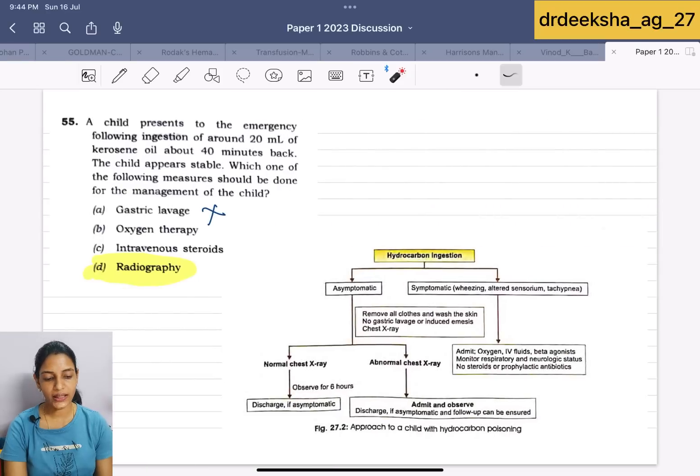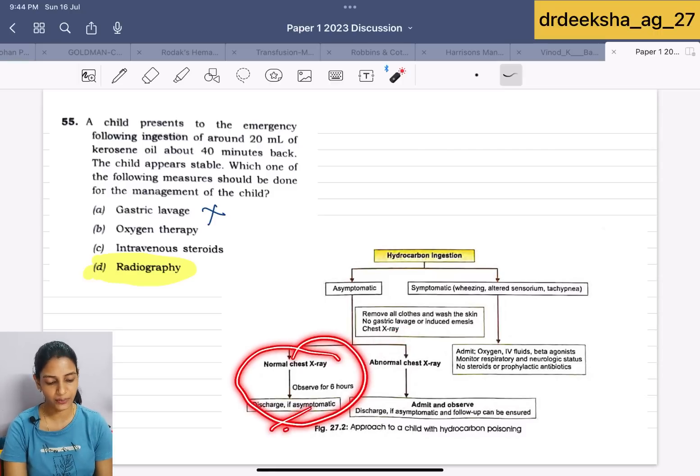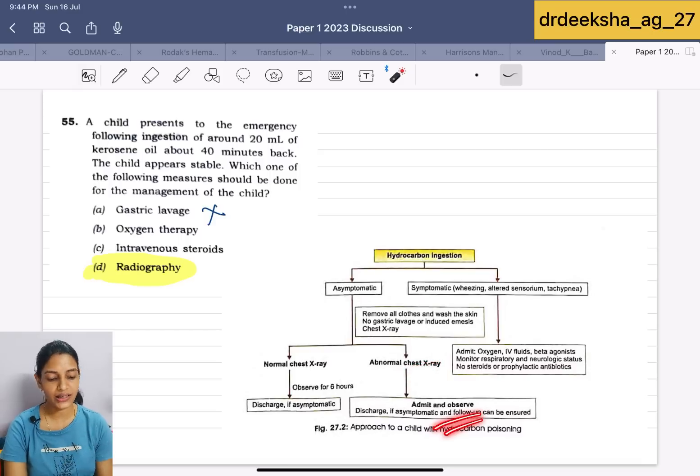Next is we have to manage the case of kerosene oil ingestion in case of child. It is a hydrocarbon. If the child is asymptomatic, then first we have to do remove all the clothes and wash the skin. No gastric lavage or emesis should be done. We should go for chest x-ray. If the chest x-ray is normal, then we have to discharge the child. If abnormal, then we have to admit and observe. If the child is symptomatic in the starting, then we have to manage by oxygen, IV fluids, beta agonist and monitor the child. But in this case, they were saying that the child appears stable. We have to do the chest x-ray. Radiography is the answer in this case.